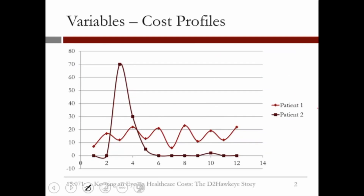To illustrate an example of how we infer further information from the data, the graph here shows on the horizontal axis time and on the vertical axis costs in thousands of dollars. Patient 1 is a patient who, on a monthly basis, has a cost of the order of $10,000 to $15,000 — a fairly significant cost, but fairly constant in time.